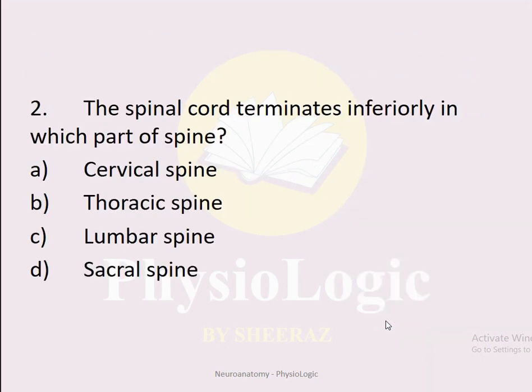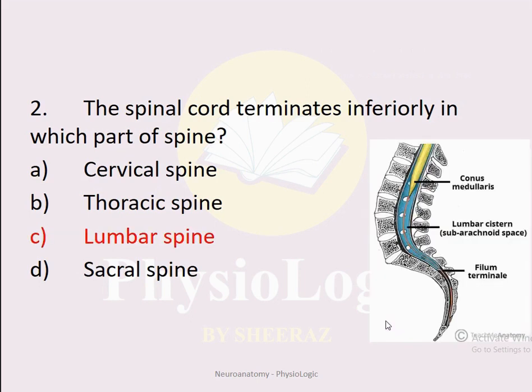MCQ number two: The spinal cord terminates inferiorly in which part of the spine? Option A: cervical spine. Option B: thoracic spine. Option C: lumbar spine. Option D: sacral spine. The correct option is C: lumbar spine.